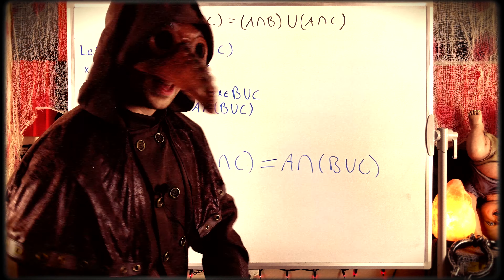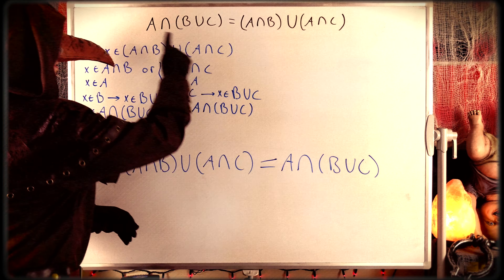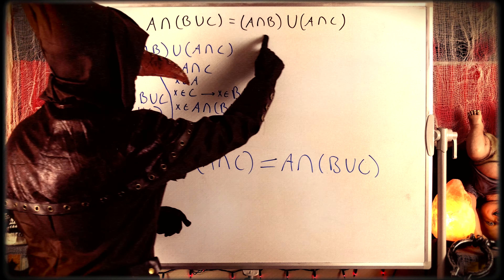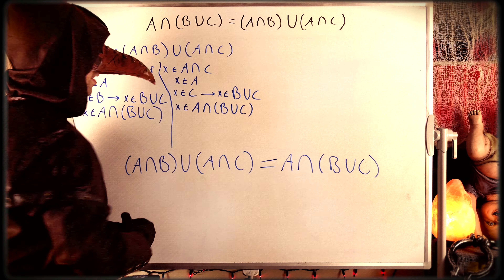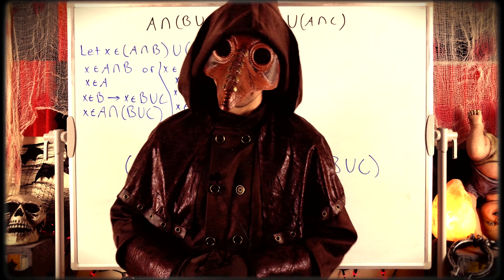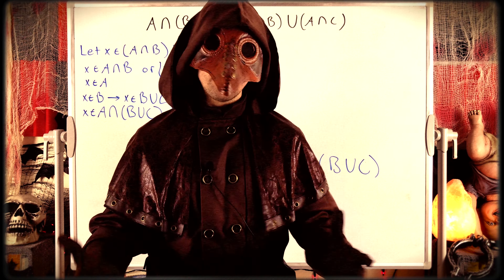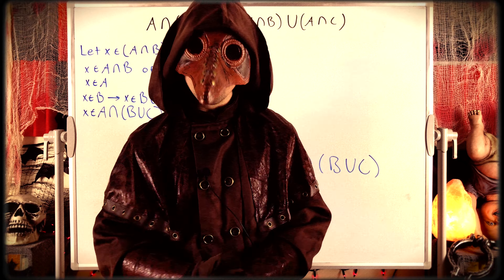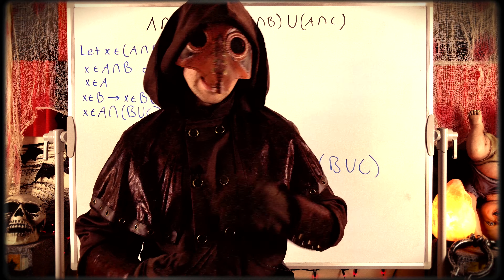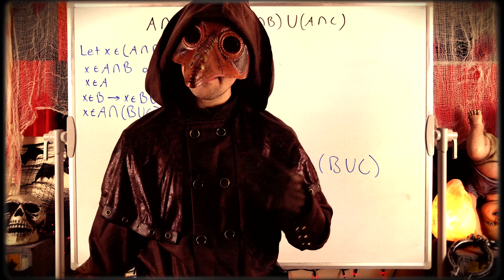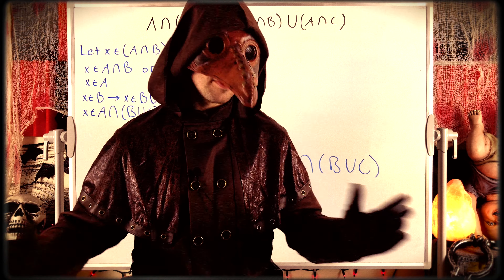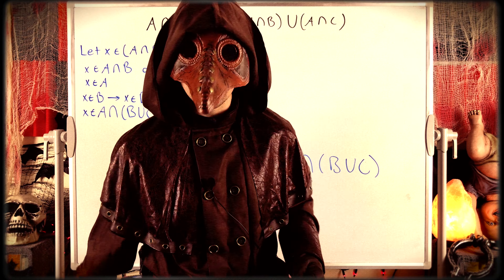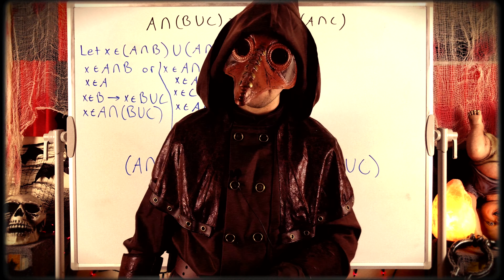And that's how we prove that set intersection distributes over union in exactly the way we would expect. It just takes knowledge of how to prove set equality, the definition of subset, set union, set intersection — and it's a pretty easy road from there.